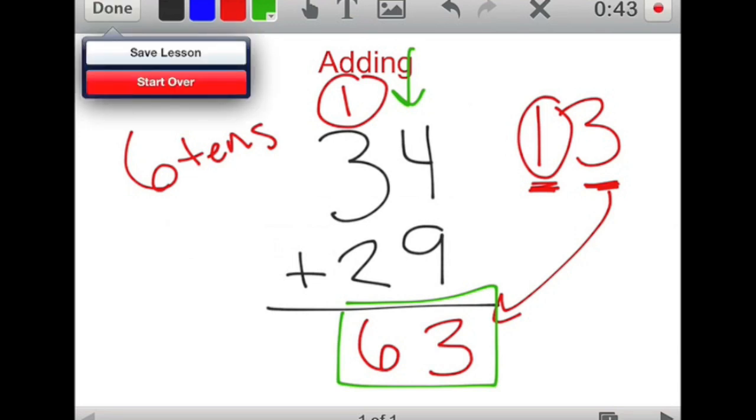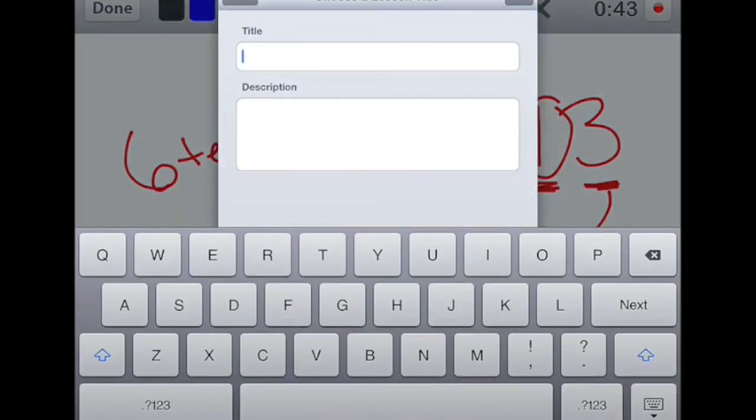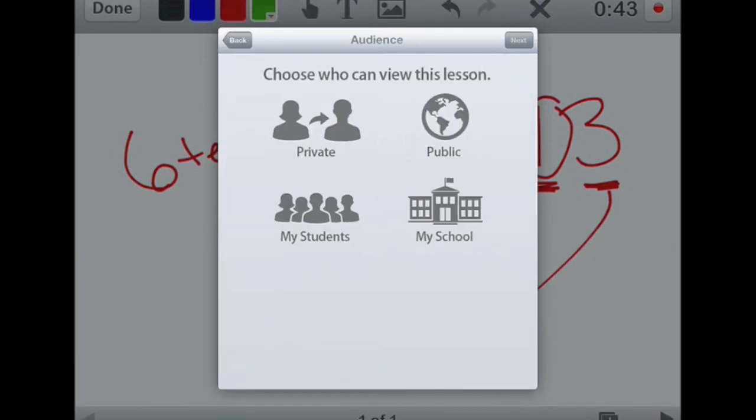You saw that when I was finished with my tutorial, I simply click done, and I'm going to click save lesson. Give the title a lesson. I'm going to put adding numbers. You can give it a description if you want. Hit next.